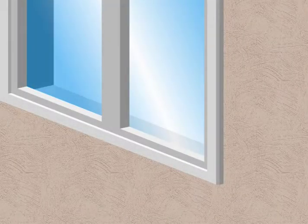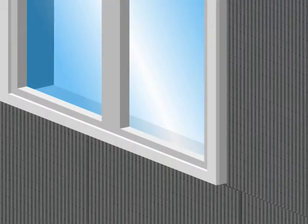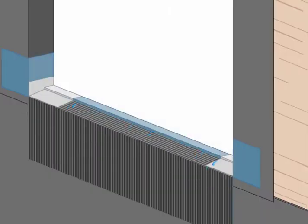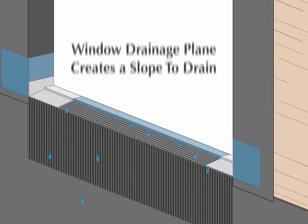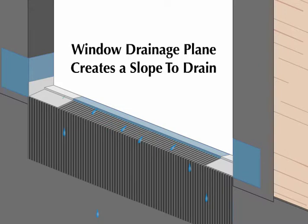MTI's Window Drainage Plane system takes this approach a step further by providing a way for moisture to escape this detail before it can cause problems. The Window Drainage Plane creates a slope-to-drain cavity off of and out of the sub-sill region of a rough window opening.